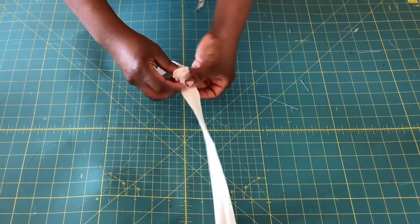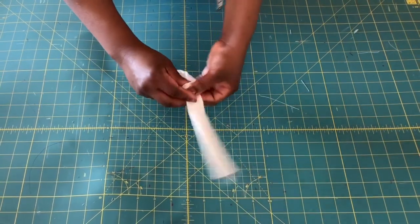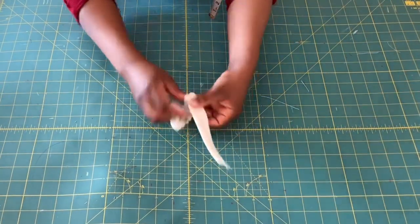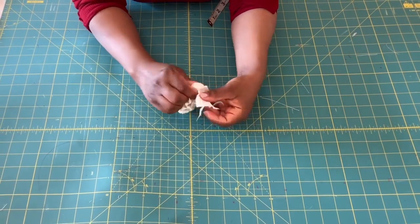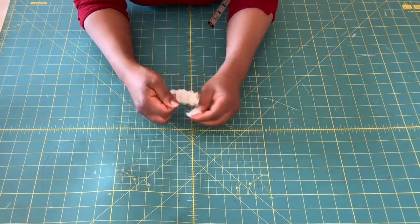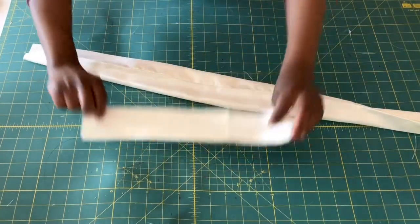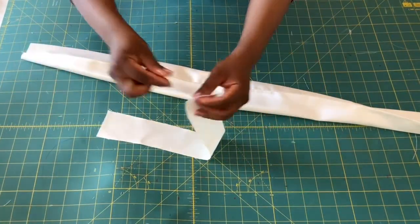After passing the elastic into the elastic casing, secure it with your pin and put it aside. Now grab your main fabric and also the inner fabric.